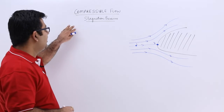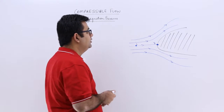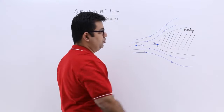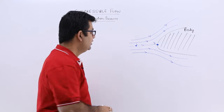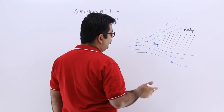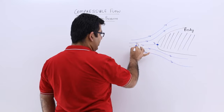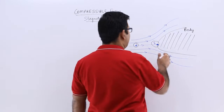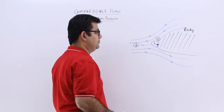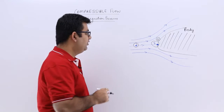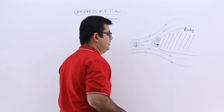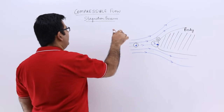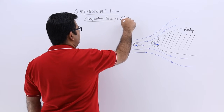Now let's talk about the stagnation pressure. So you have a body like this, and over this body some fluid which is compressible in nature is flowing. Now we take two points: point 1 over here and point 2 over here. Point 2 is the stagnation point where the flow becomes stagnant. So we need to find out the properties — that is the pressure and temperature at the point of stagnation. We will start with the calculation of the stagnation pressure.